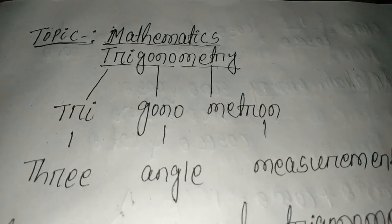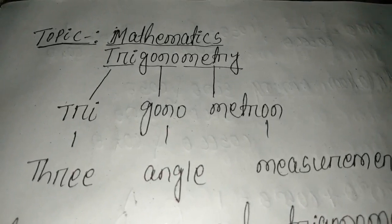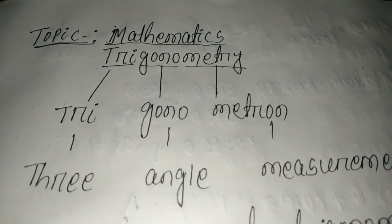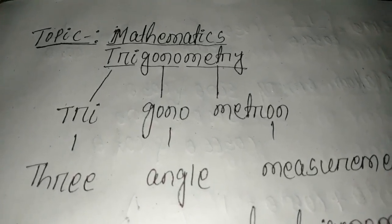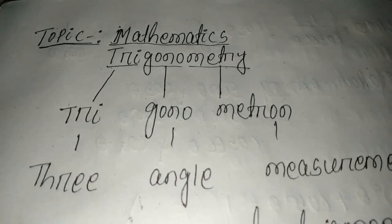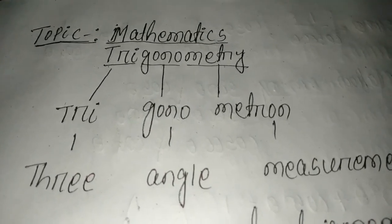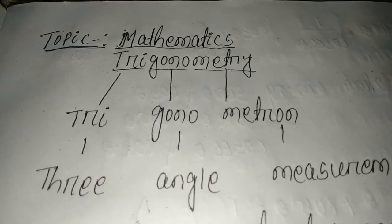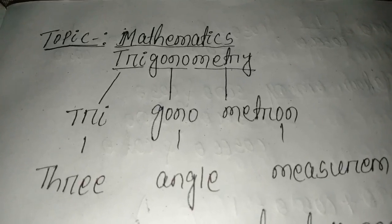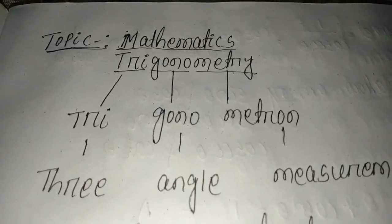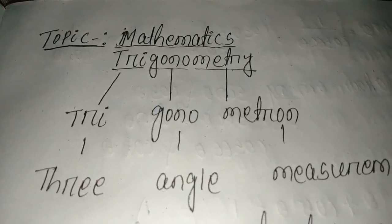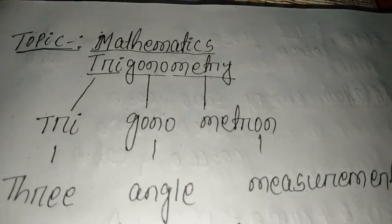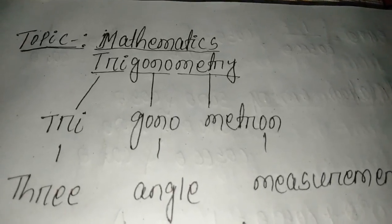Today's subject is Mathematics and the topic is Trigonometry. Trigonometry is divided into three parts: Tri, Gono, and Metron. Tri means three, Gono means angle, and Metron means measurement. So three angle measurement is known as Trigonometry.